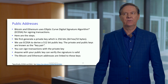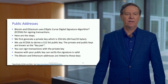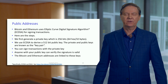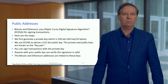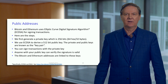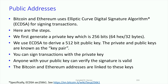Both Bitcoin and Ethereum use elliptic curve digital signature algorithms — there are many different types. The first step is you generate a private key, which is 256 bits, represented as 64 hexadecimal characters or 32 bytes. We use the elliptic curve digital signature algorithm to derive the public key, which is 512 bits. Together, the private and public key are called the key pair.